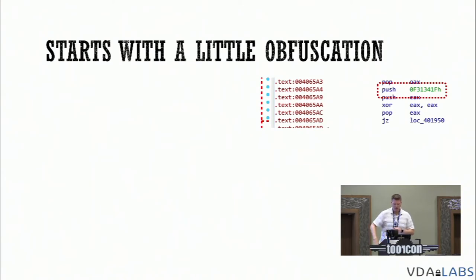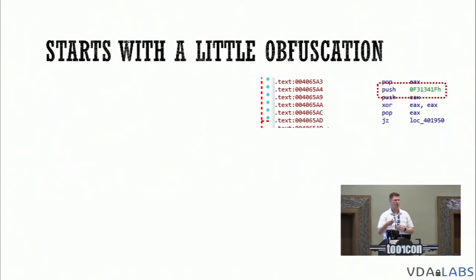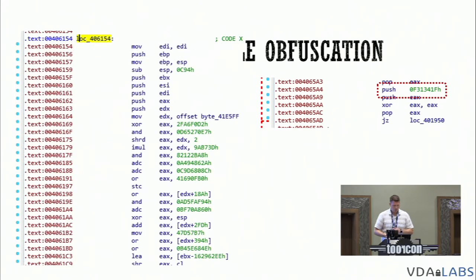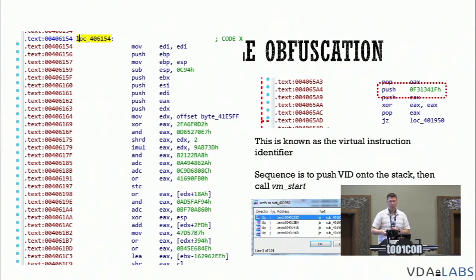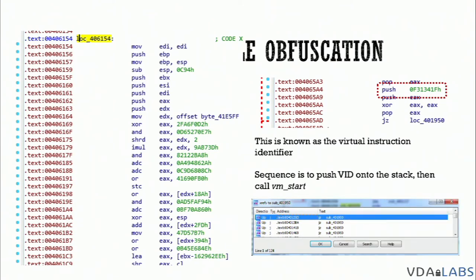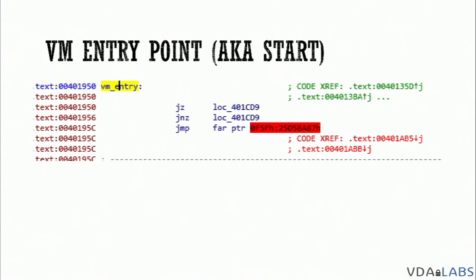If you disassemble the sample, the beginning starts with a bunch of junk instructions, and as you navigate down you'll find this pattern: a PUSH followed by a JMP. That jump is actually our VM entry point, and the PUSH value identifies the virtual instruction — we're calling the entry point and pushing the ID of the instruction we want to call. You can recognize this by looking at cross references to that location — in this sample there are 124 different cross references — so my initial assessment was that it was the entry point, which I was able to confirm with the published research.